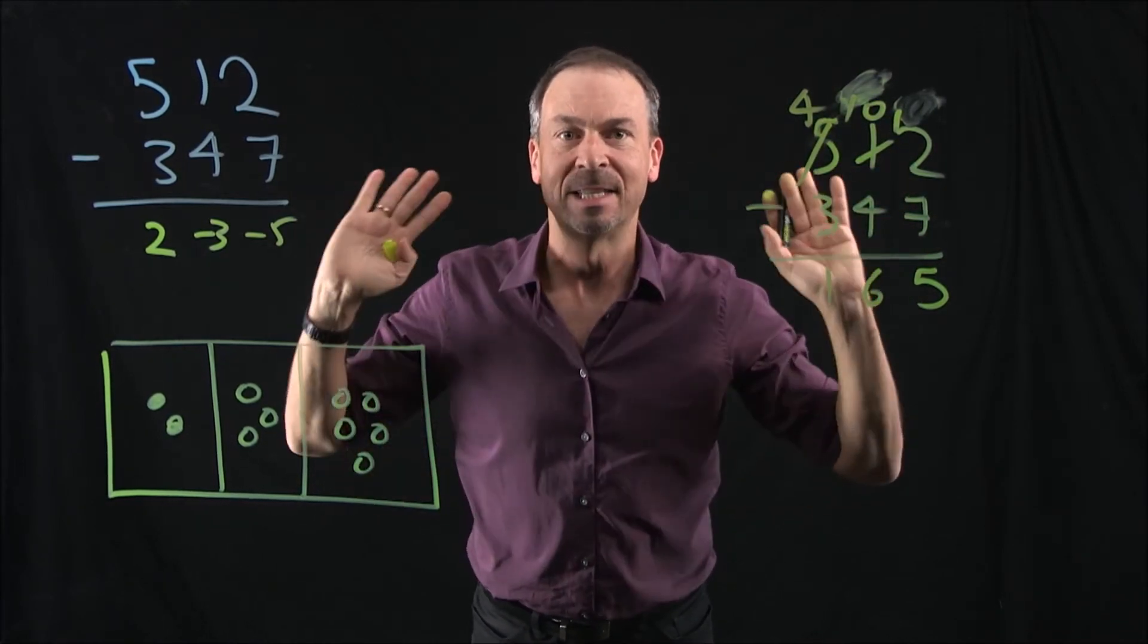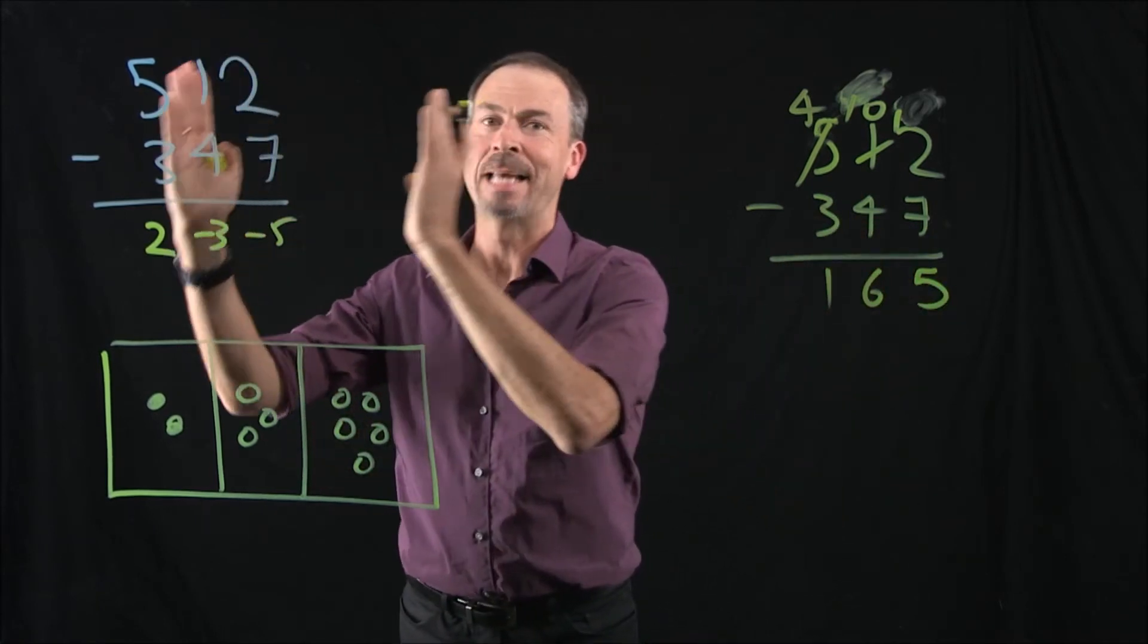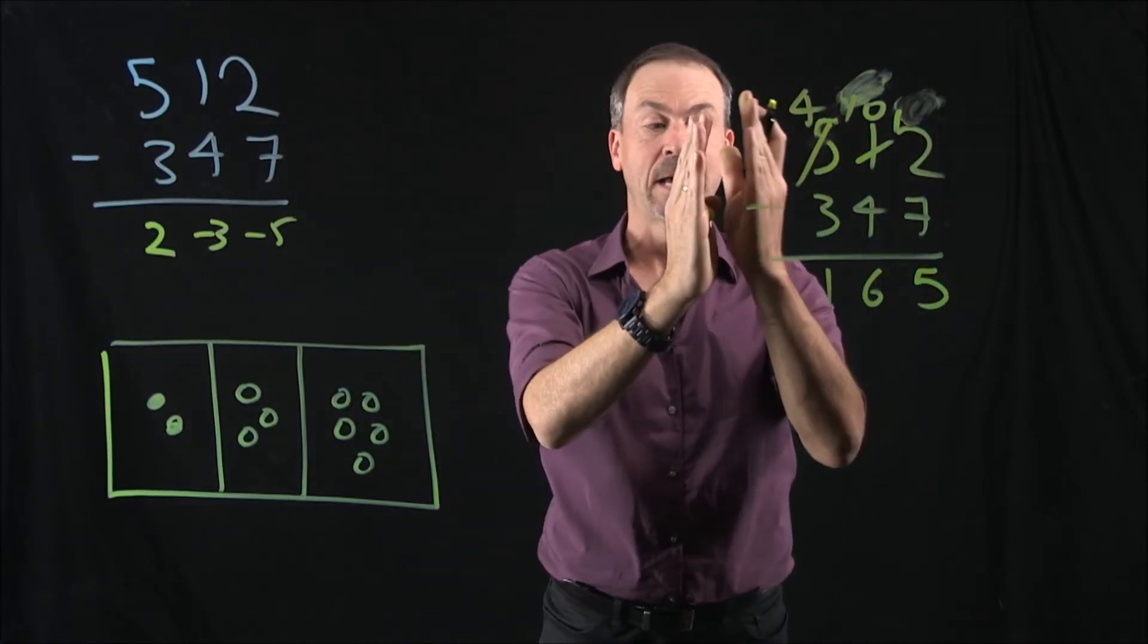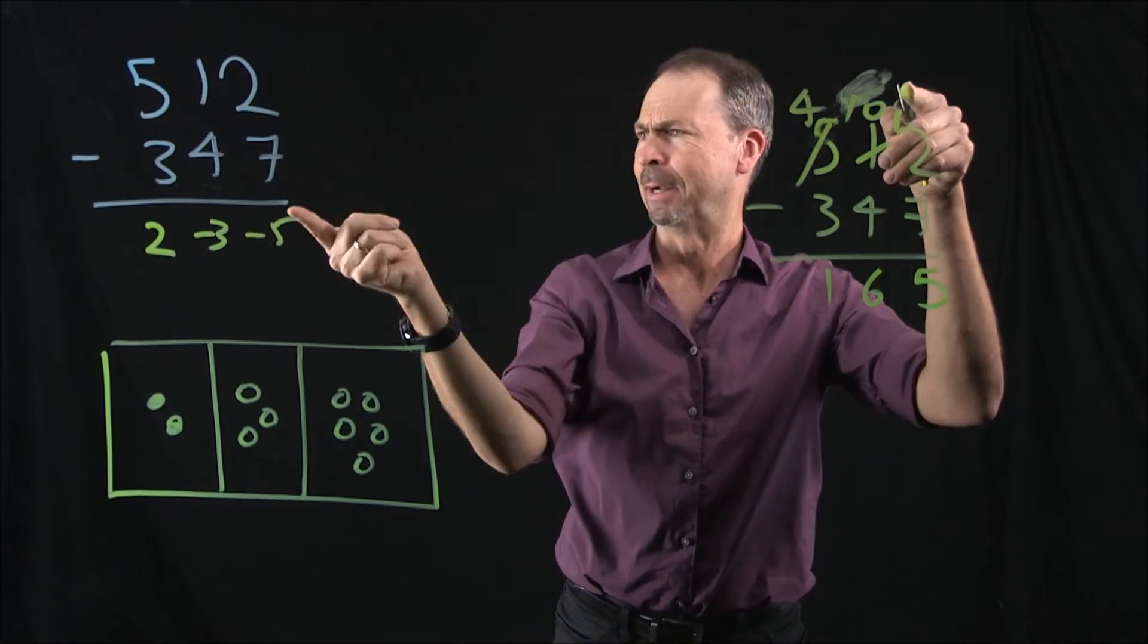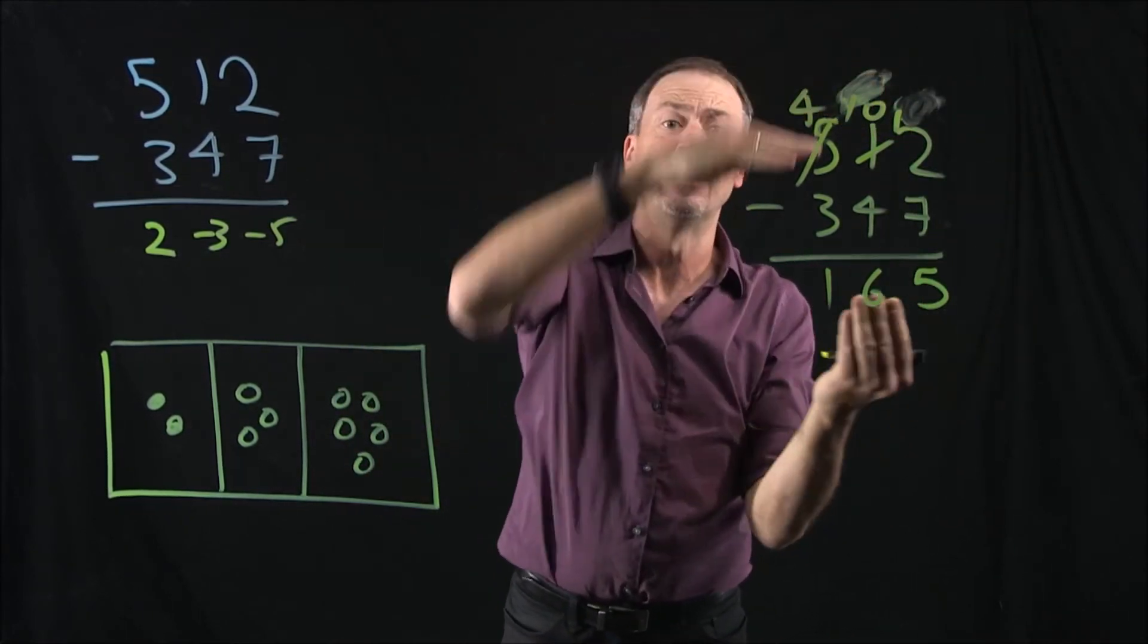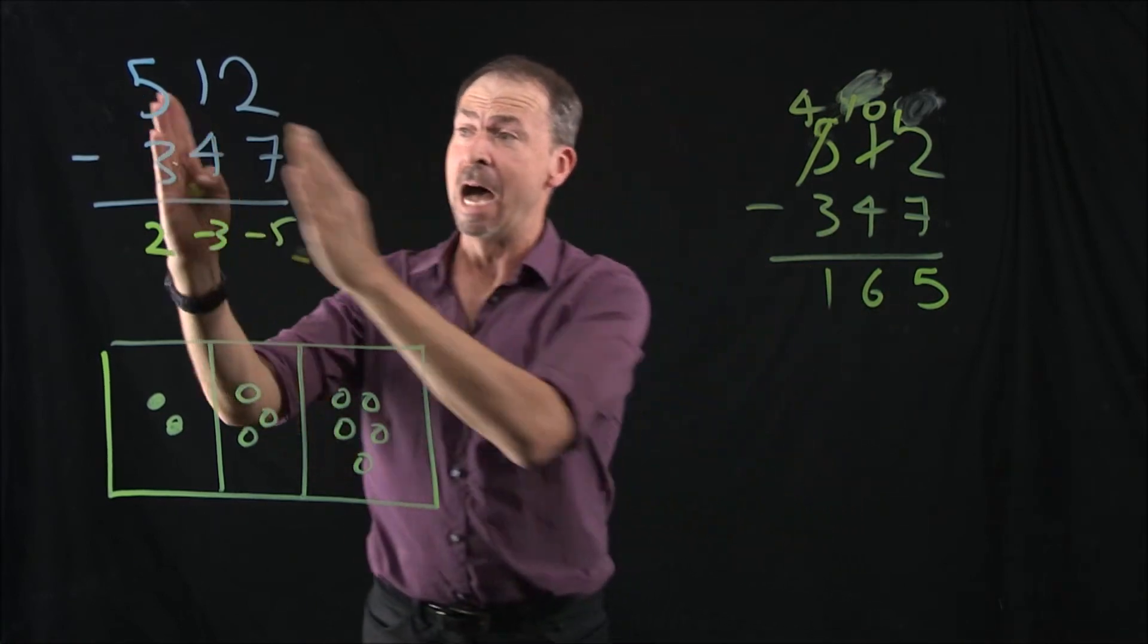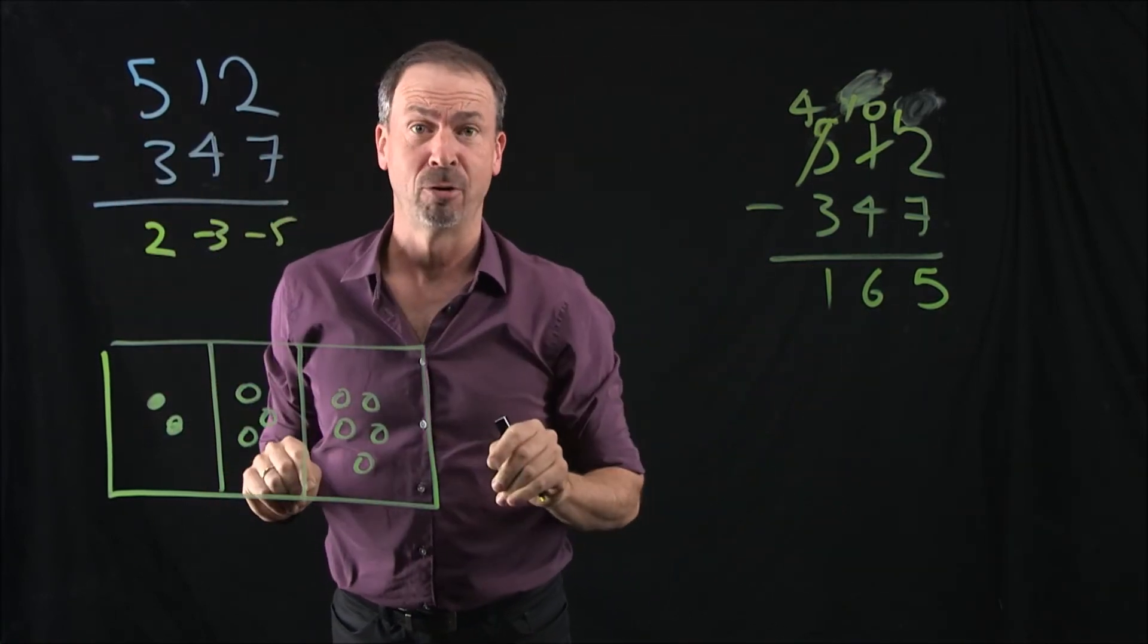So the standard algorithm is actually doing exactly the same thing as me. It just goes right to left and does the unexplosions as you go along. Uses way less ink, maybe. Well, maybe uses more ink. I don't know. But it goes right to left and does unexplosions as you go along. I go left to right and do the unexplosions at the end.